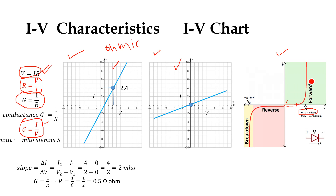In the diode chart, in the region where there is no current, the resistance is very high and the conductance is equal to zero. There is infinite resistance in that region because there is no flow of current. But in the forward bias region, we see the resistance decreases and the conductance increases exponentially — showing the reciprocal relationship between conductance and resistance.